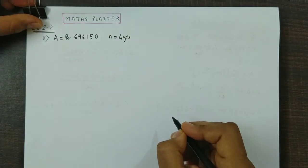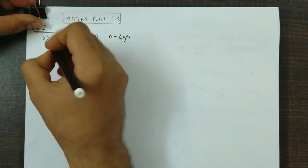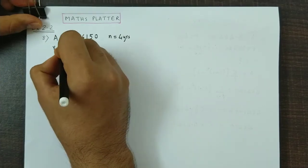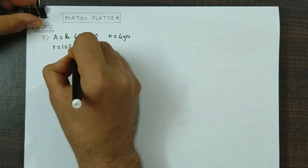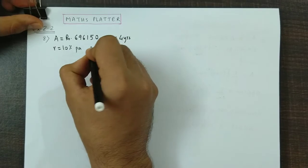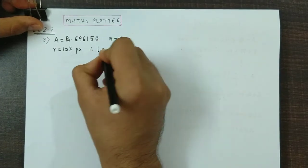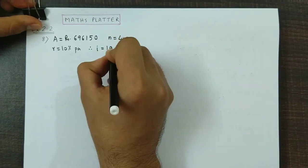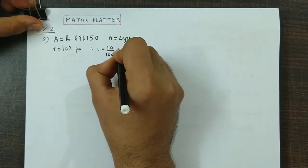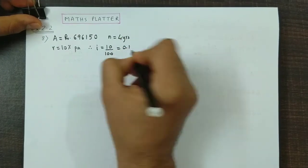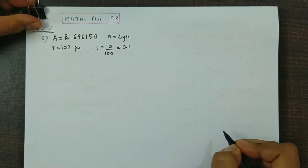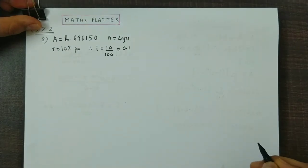The bank rate of interest is 10%. So, R is 10% per annum. We get i value, that would be 10 by 100, so that is 0.1. We need to find what amount should he invest every year.